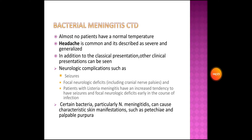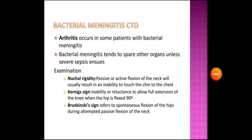Patients with Listeria meningitis have an increased tendency to have seizures and focal neurological deficits early in the course of infection. Certain bacteria, particularly Neisseria meningitidis, can cause characteristic skin manifestations such as petechiae and palpable purpura. Arthritis also occurs in some patients with bacterial meningitis, which tends to spread to other organs unless severe sepsis ensues.